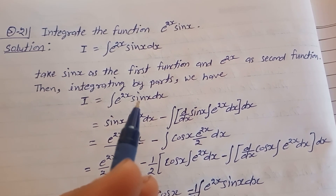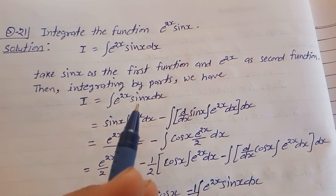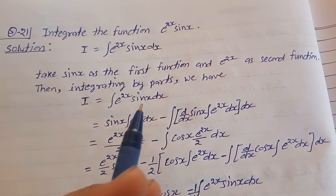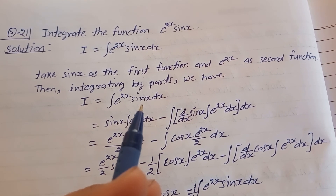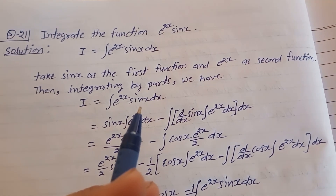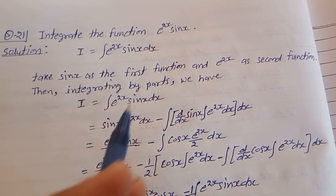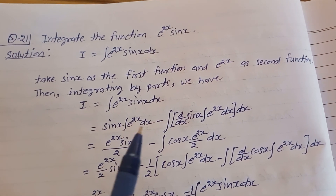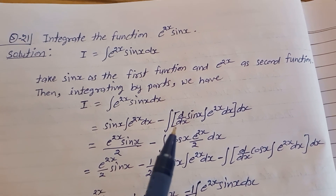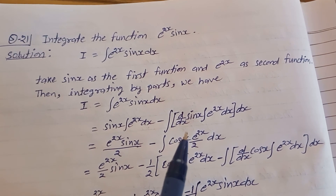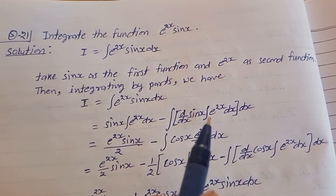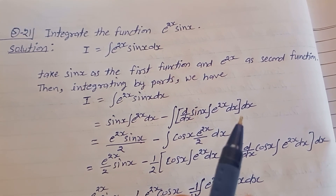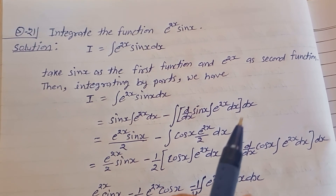Integrating by parts, the formula for two product functions is: first function as it is, multiplied by the integration of the second function, minus the integration of the differentiation of the first function into the integration of the second function. So we get sin(x) as it is, times the integration of e^(2x) dx, minus the integration of d/dx of sin(x) into the integration of e^(2x) dx, all dx.